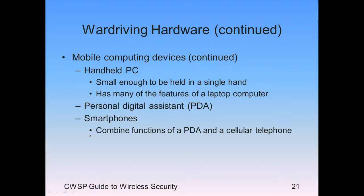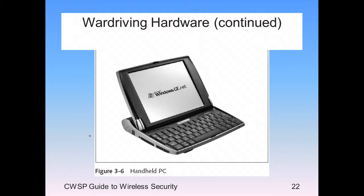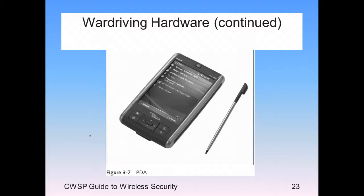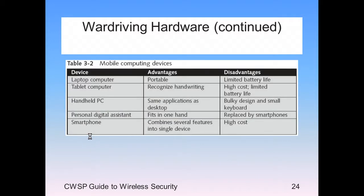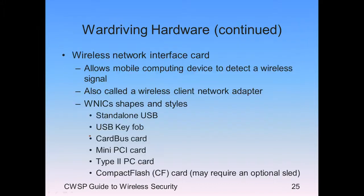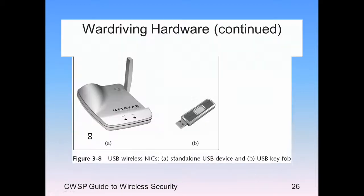All of these mobile devices have limited battery life. You can get an inverter to plug into the car's auxiliary power port so you don't have to worry about the battery going dead while driving. You need a NIC — there are all sorts of different NICs — and you must have wireless capability in order to find the access points.